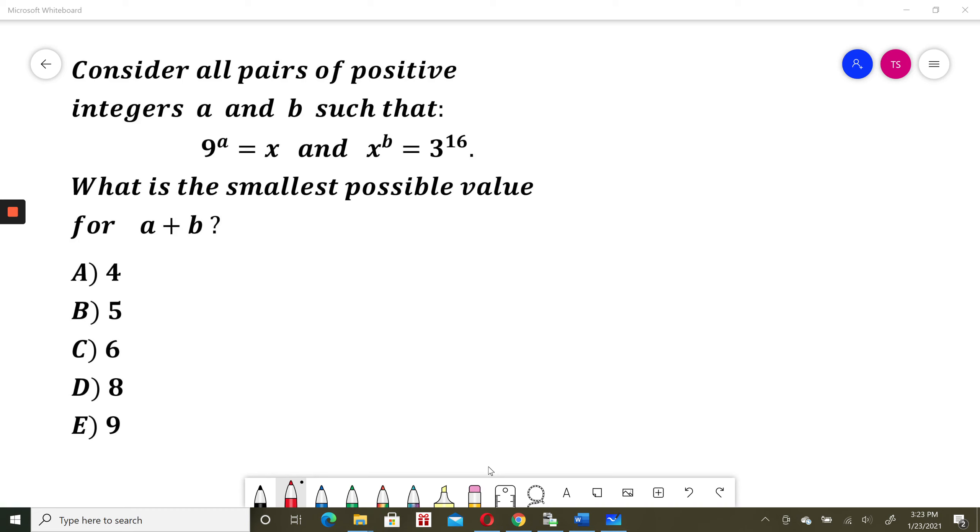Consider all pairs of positive integers a and b such that 9 to the power of a equals x and x to the power of b equals 3 to the power of 16. What is the smallest possible value for a plus b?